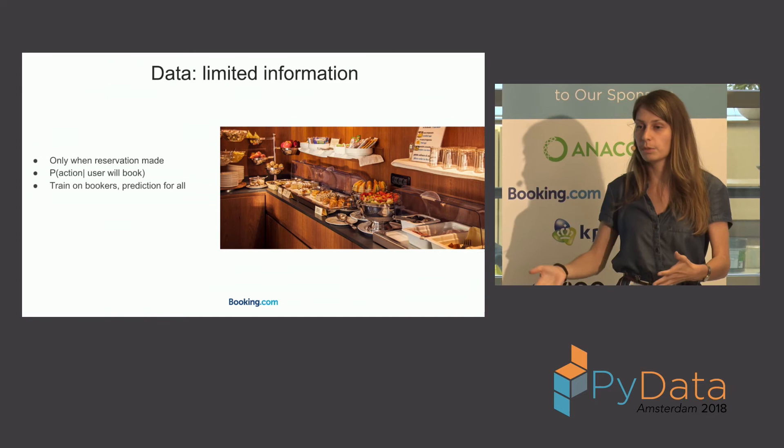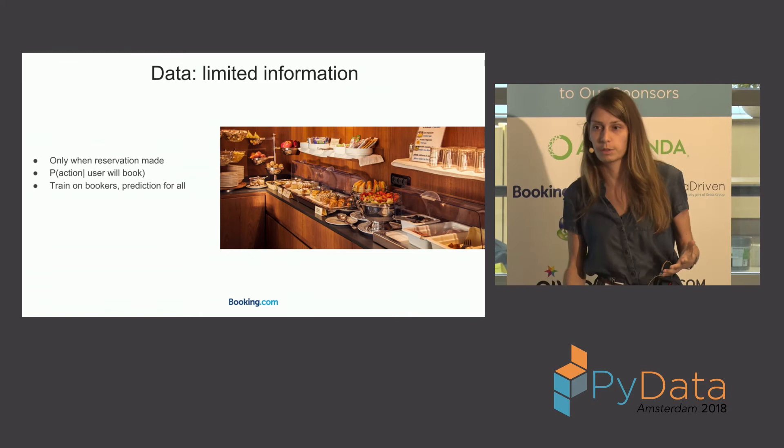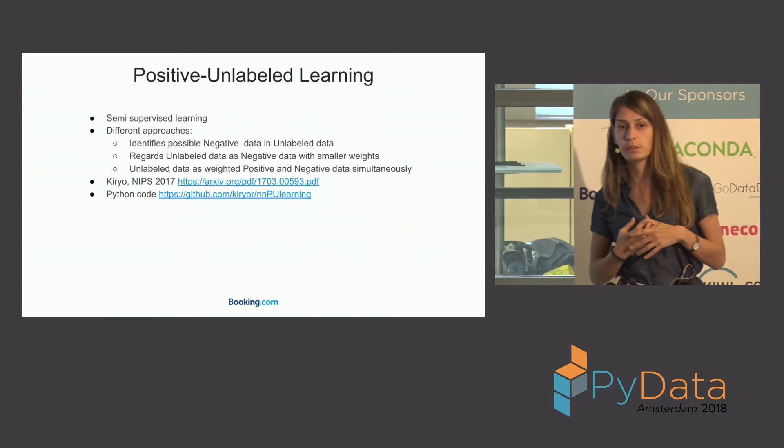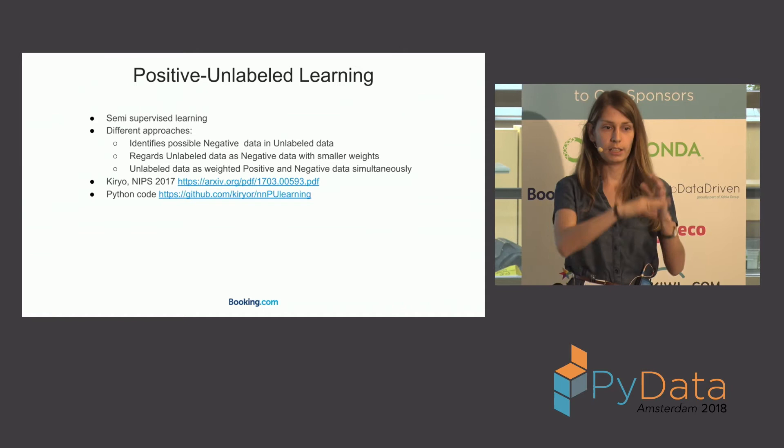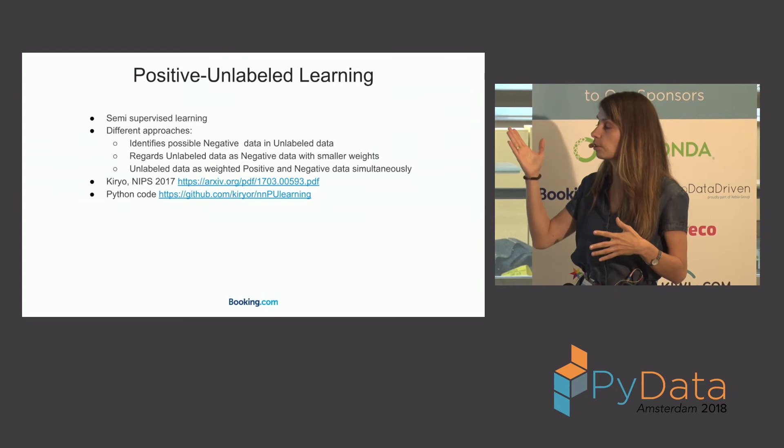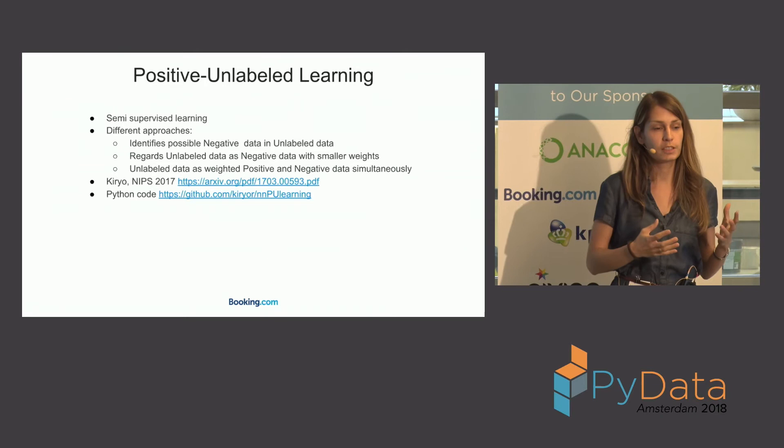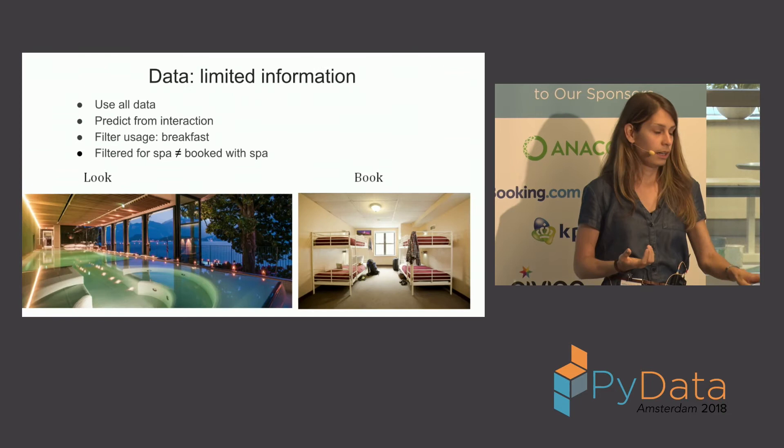Some users will book anyway regardless of what you show them, so our model won't actually help them. We want to help users who are confused by the information. There are many ways to deal with this kind of problem where you have labeled data for some portion and no labels for the rest — you can look at papers on positive-unlabeled learning, and the approach depends on what type of data and labels you have.